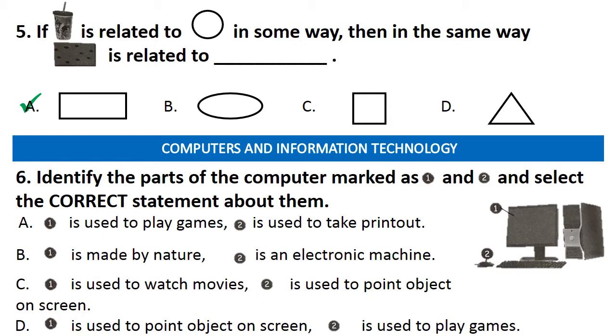Next is computers and information technology. Question number 6, identify the parts of the computer marked as 1 and 2 and select the correct statement about them. Answer is option C. Because here the part marked as 1 is of a monitor, it looks like a TV screen in which we can watch movies. And the part marked as 2 is of a mouse and it is a pointing device that is used to point items on screen. So the correct answer is option C.